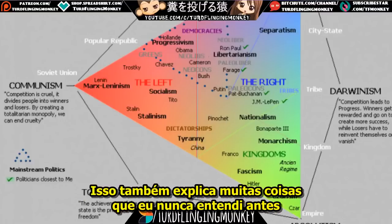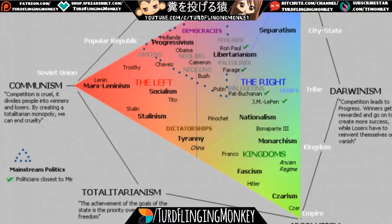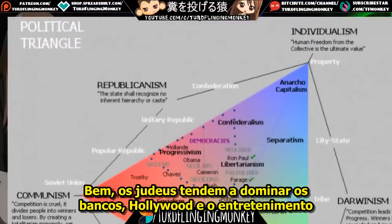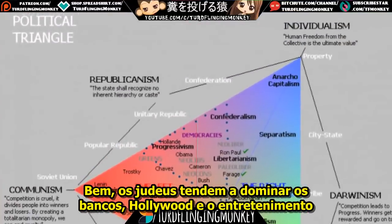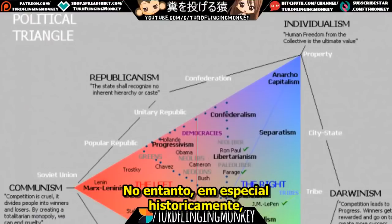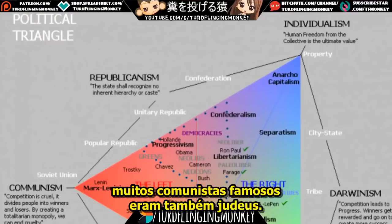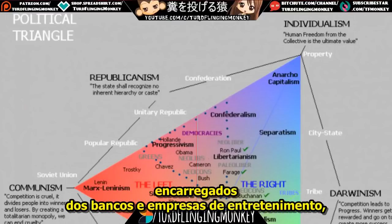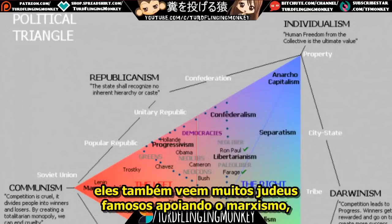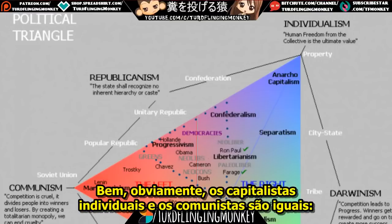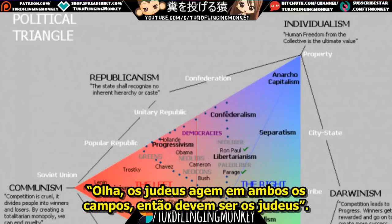This also explains things I never understood before. Why does the alt-right blame Jews for everything? Well, Jews tend to be in banking, Hollywood, and entertainment — individual capitalism. But historically, a lot of famous communists were also Jews. So the alt-right sees Jews in both capitalism and Marxism and concludes: individual capitalists and communists are the same thing, and you see Jews in both camps — it must be the Jews.